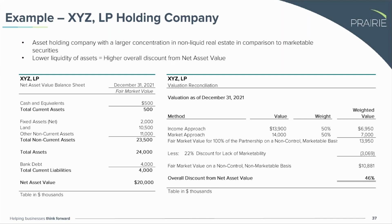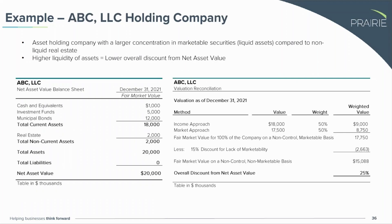With the same $20 million net asset value, we've gone through our income approach and market approach on the right, looking at our minority level of earnings and cash flow and applying a 22% discount. We arrive at a fair market value on a non-control, non-marketable basis of just shy of $11 million. Comparing that to our $20 million net asset value, we have the ability to support a higher overall discount from net asset value of 46%.